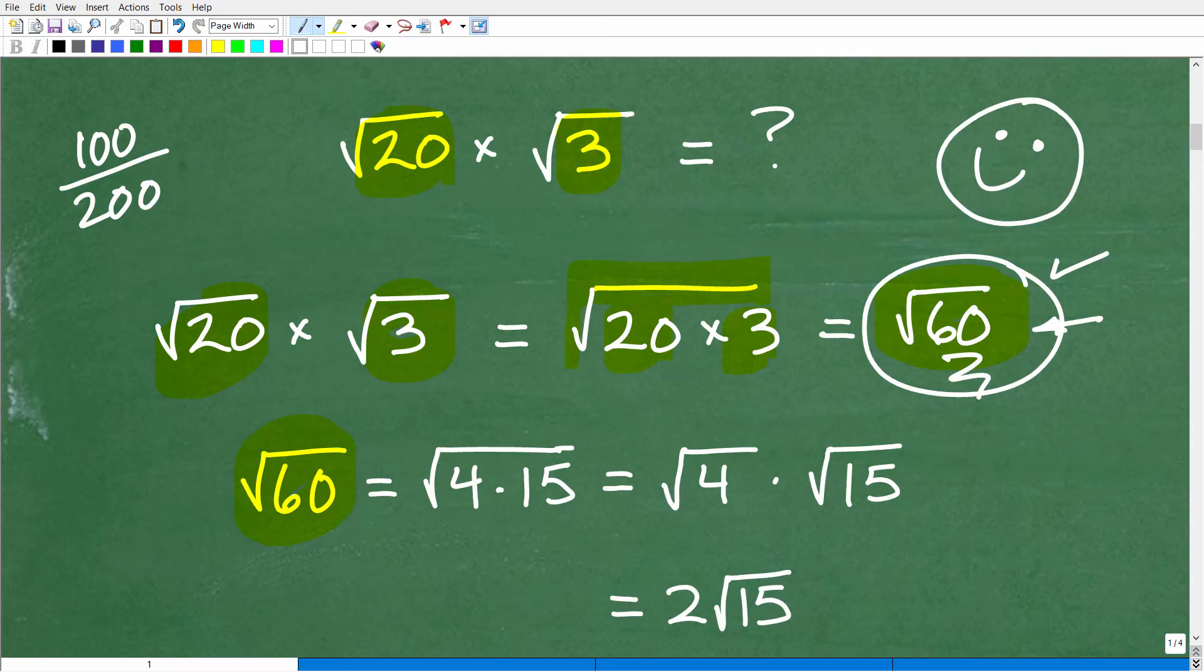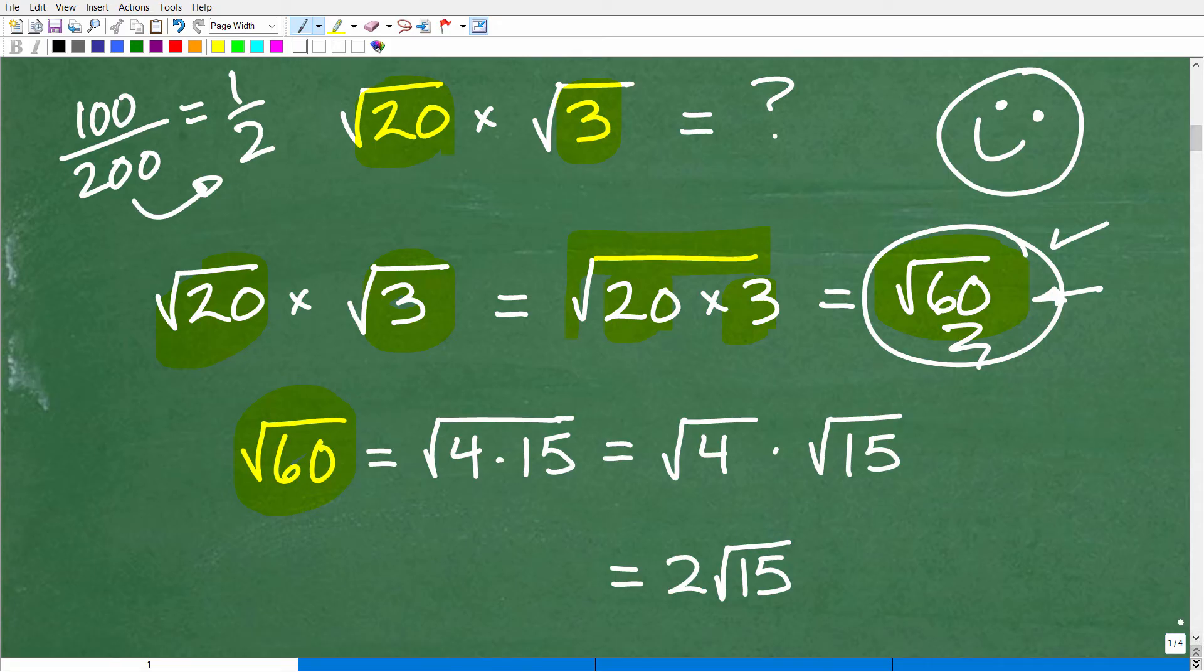So effectively, this is like getting a fraction problem correct. And let's say your final answer was 100 over 200. Now, although that would be your final answer, let's say that's correct, technically correct, your teacher would probably get upset at you if you didn't reduce your 100 over 200 to one half. So it's the same thing with square roots.